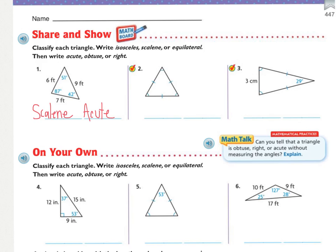Number two doesn't give us any measures, but we have tick marks. All three sides have one tick mark, meaning they're all the same length — they are equal, making it an equilateral triangle based on the sides. Based on the angles, they are all the same measure because of the arc, and they look squished — not straight up and down or open past 90 degrees. So those are all acute angles, making it an acute triangle.